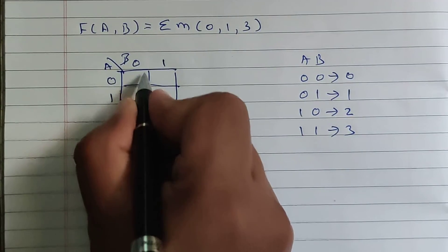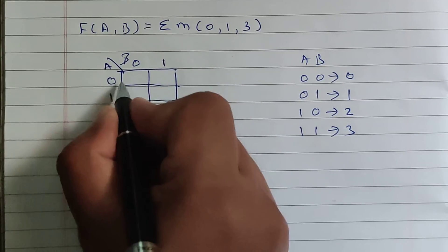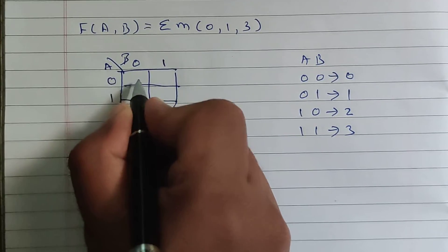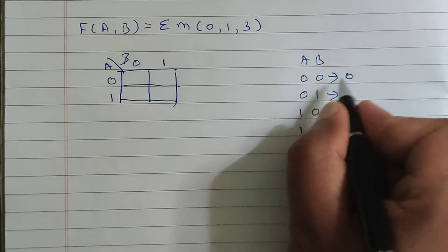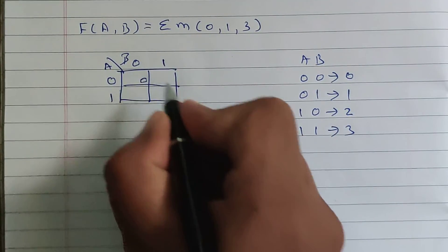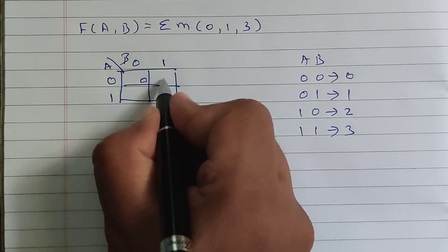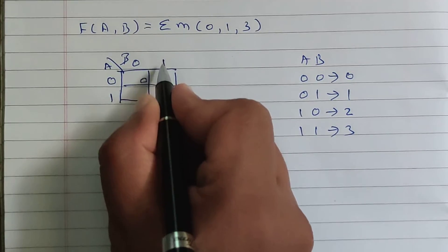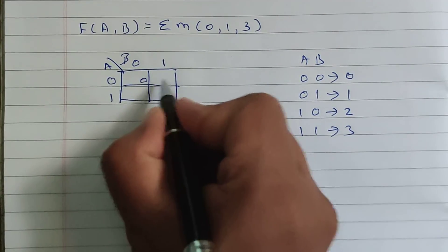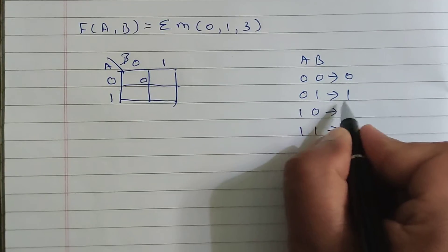Now this single box is called a cell. For this cell, value of A is equal to 0 and value of B is equal to 0, so 0 0 is 0. Now for this cell, A is equal to 0, B is equal to 1. Therefore, this value will become 0 1 and 0 1 is 1.